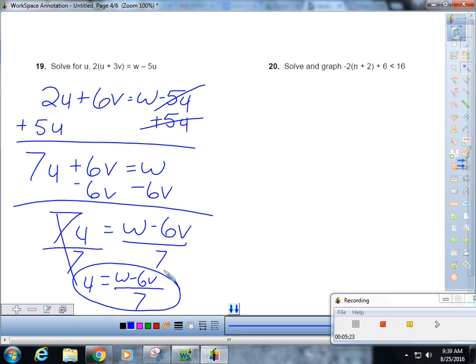Okay, and 20, finally, we're going to graph. That's not an absolute value, so this is not an or case. Negative 2n minus 4 plus 6 is less than 16. Combine like terms. Negative 2n plus 2 is less than 16. Subtract 2.